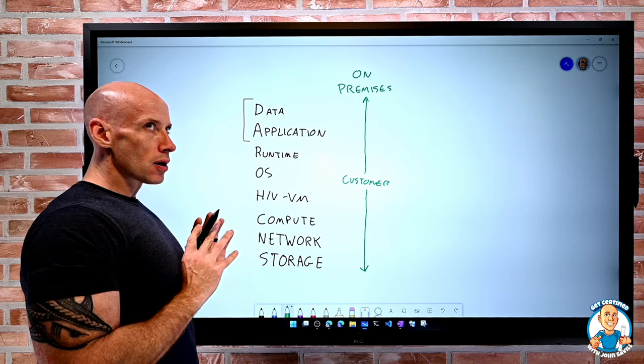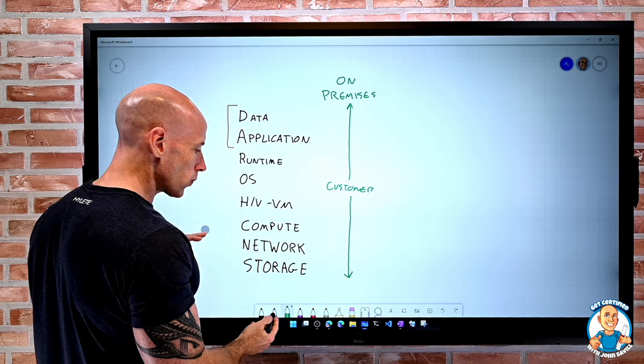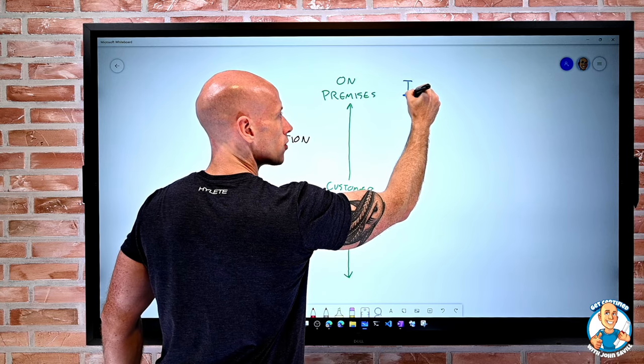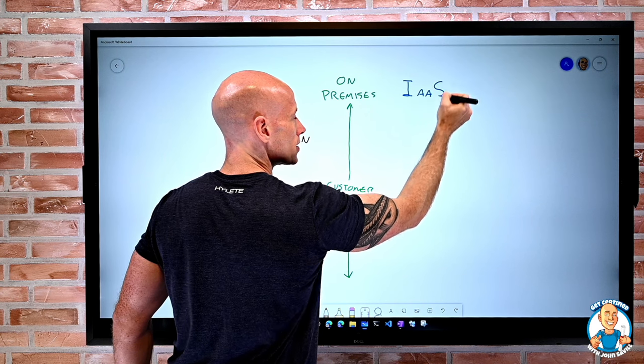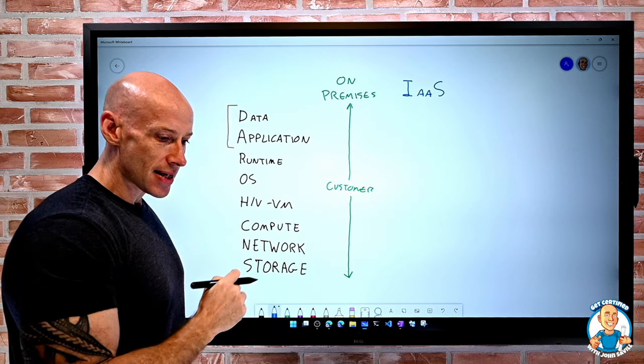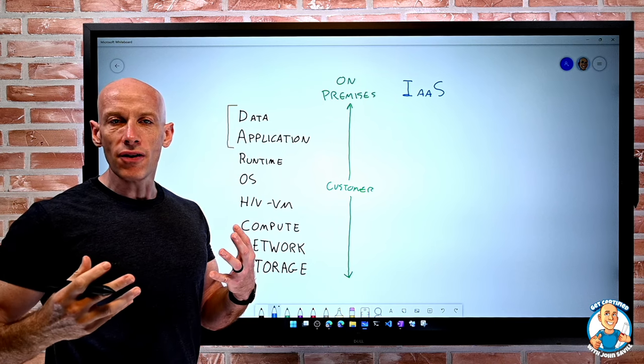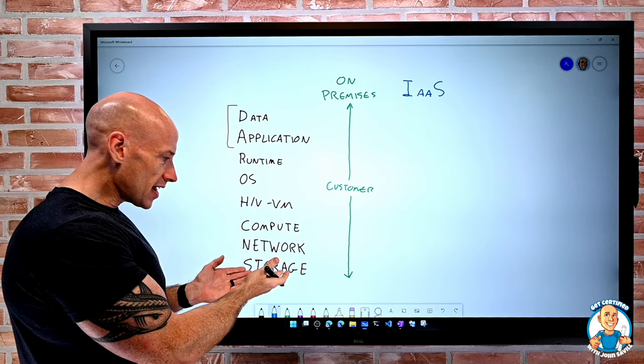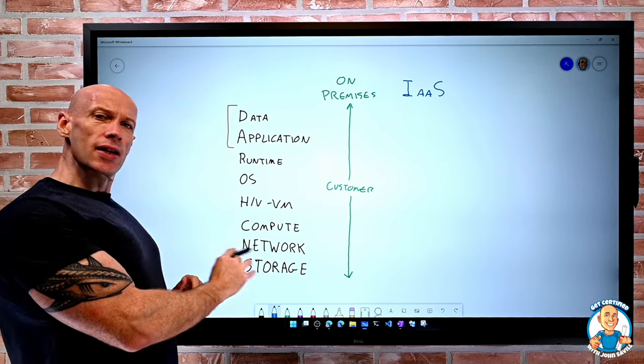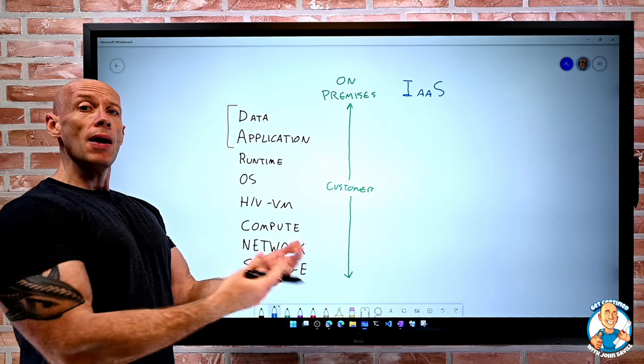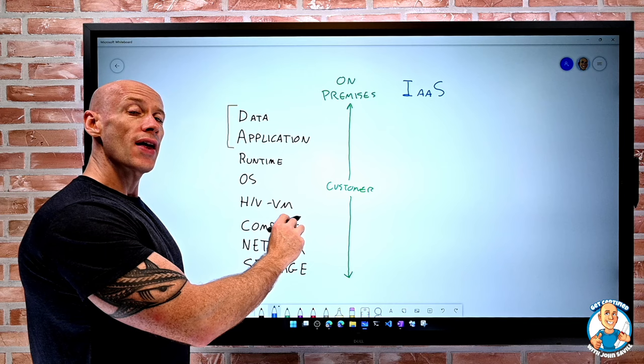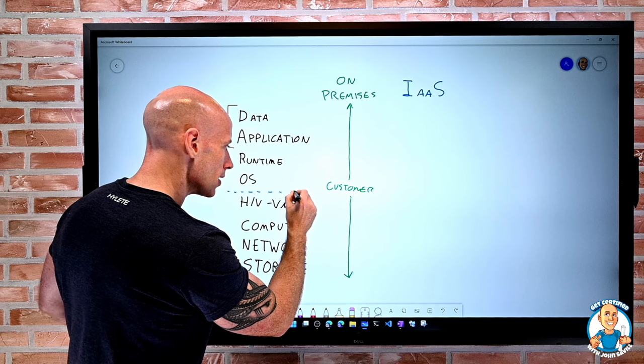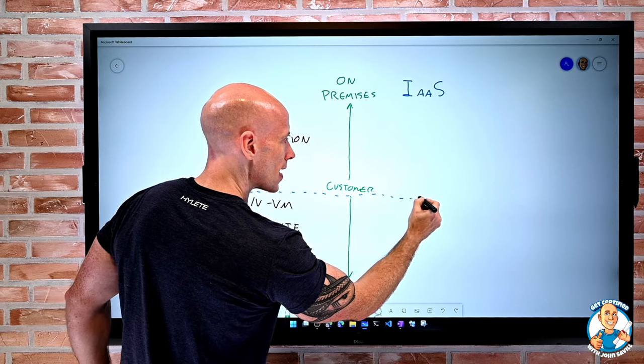When I start to look at cloud models, the first type of service we tend to see is infrastructure as a service, IaaS. This can largely be thought of as a VM in the cloud. Now in this model, if I think about the physical fabric, the storage, the network, the compute, and the hypervisor that sits on top of that, all of that is the responsibility of the cloud provider.